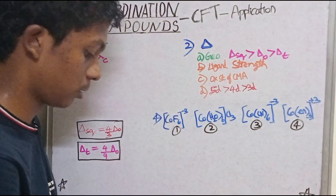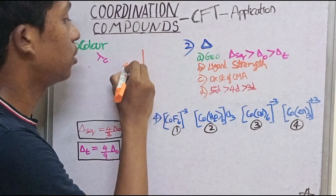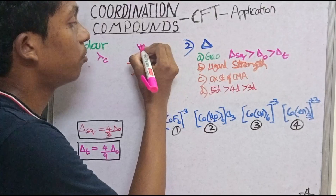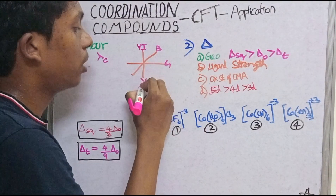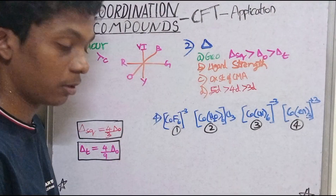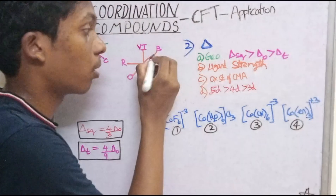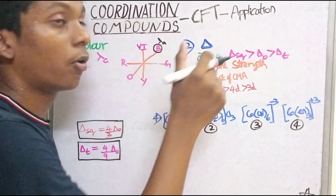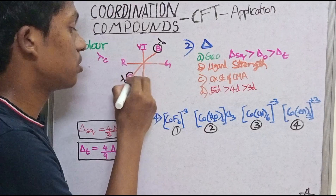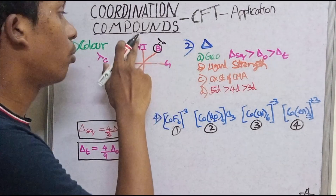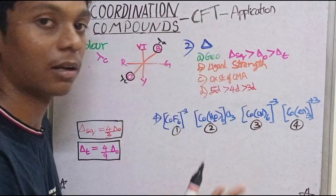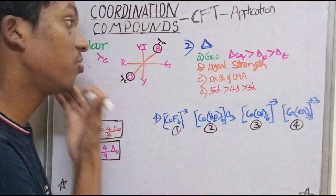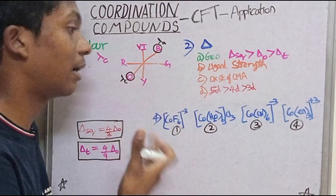Let's look at the color wheel using VIBGYOR. For example, if lambda-a (wavelength absorbed) is blue, then lambda-c (the complex color seen) is orange — the complementary color. If violet or indigo is absorbed, the complex color will be yellow-green. The complex color is always the complementary color of what is absorbed.